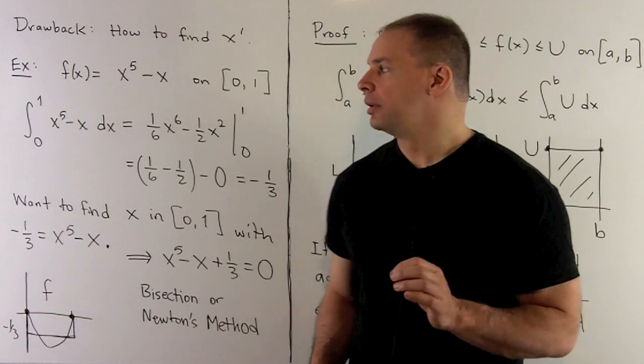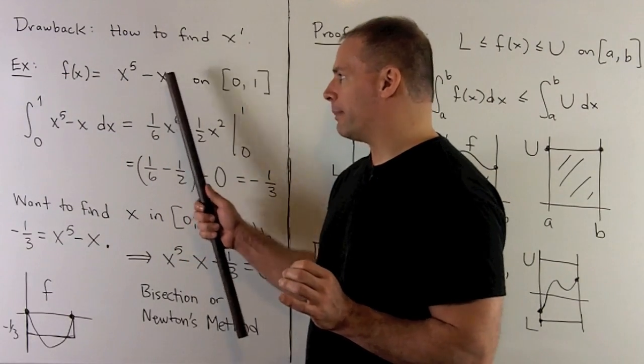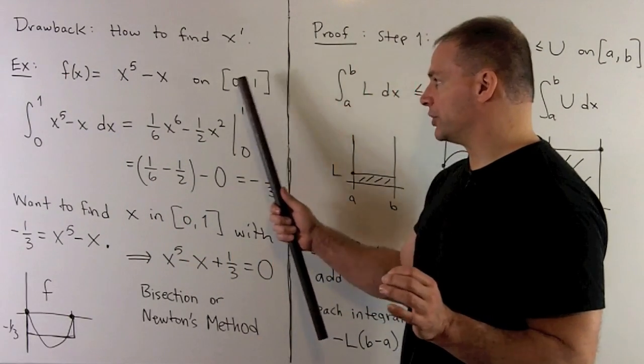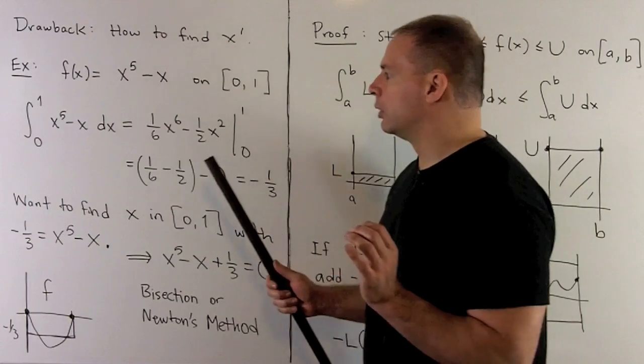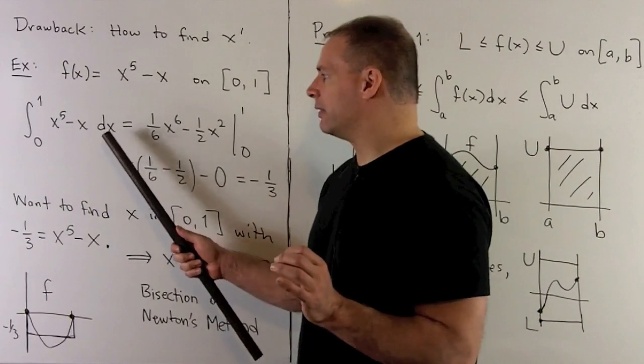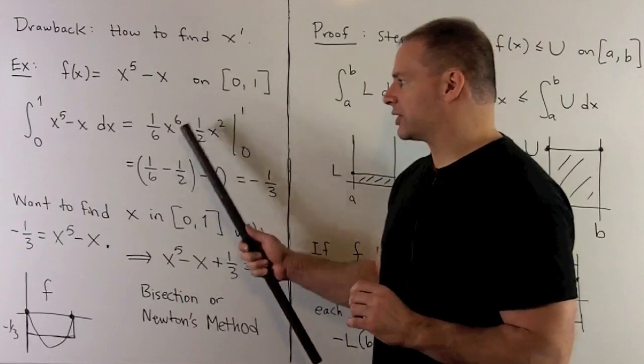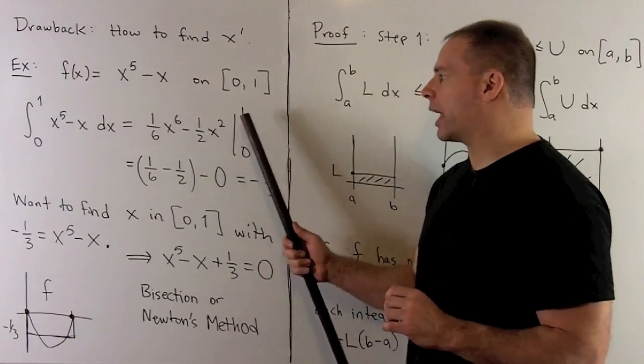So, let's look at another example. I'll have f(x) = x^5 - x on the interval from 0 to 1. We set up our definite integral. We're going to find an antiderivative. So, we're just going to add 1 to each exponent, divide.